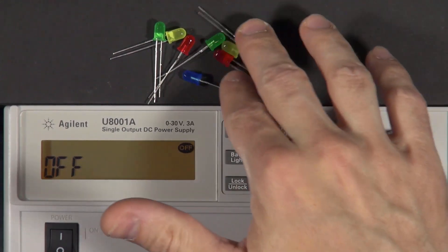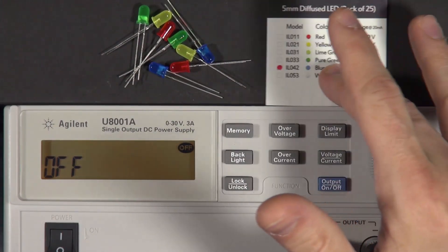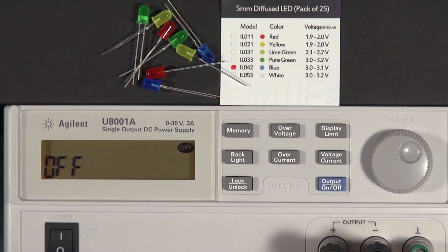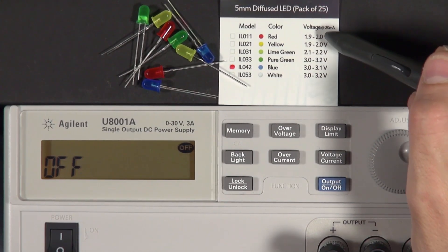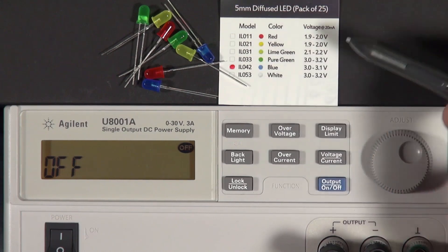As you can see, they come in a variety of different colors. And the manufacturer has provided us a little bit of information. This was on the packaging that these came in. And they're telling us a voltage that we need to give these things in order to get them to light up.